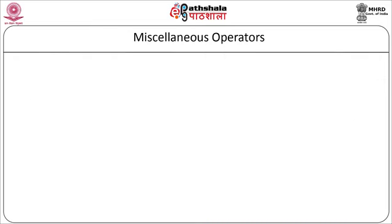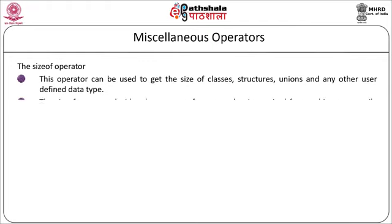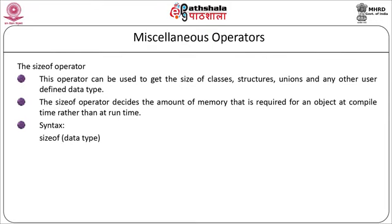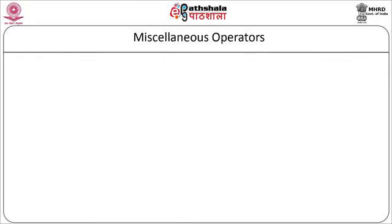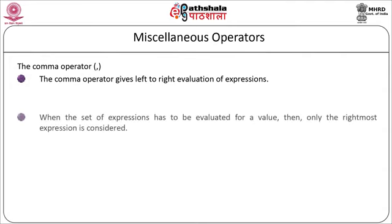Miscellaneous operators include three types: sizeof operator, comma operator, and conditional operator. The sizeof operator returns the size of classes, structures, unions, or any user-defined data type at compile time rather than at runtime. Syntax: sizeof(data_type). Example: sizeof(float). The comma operator gives left-to-right evaluation of expressions. When a set of expressions is evaluated for a value, only the rightmost expression is considered.